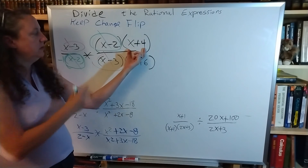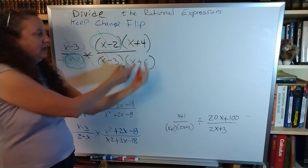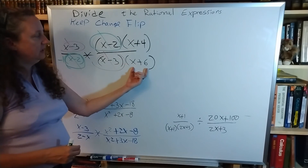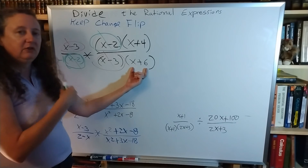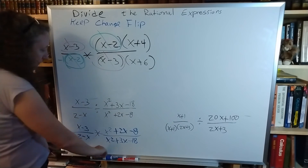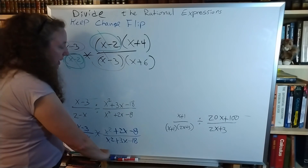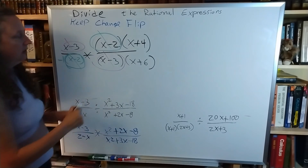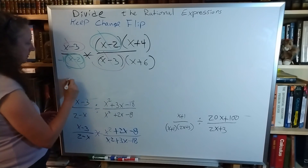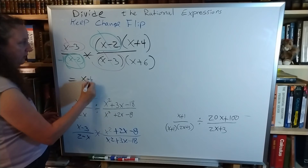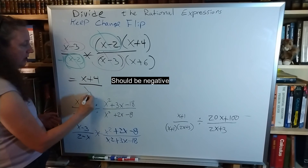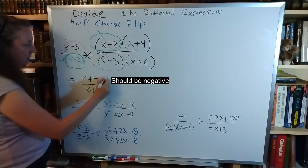Now I see x plus 4 — do I have any x plus 4's? No. x plus 6 — double check — no. I've reached the end, so my answer is x plus 4 over x plus 6.